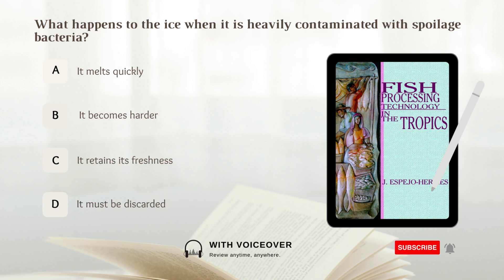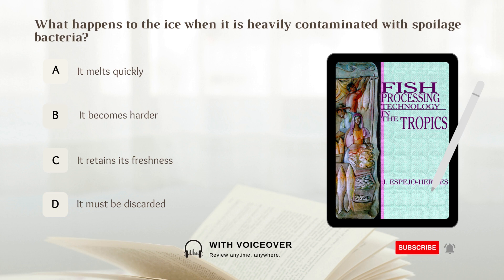What happens to the ice when it is heavily contaminated with spoilage bacteria? A. It melts quickly. B. It becomes harder. C. It retains its freshness. D. It must be discarded.